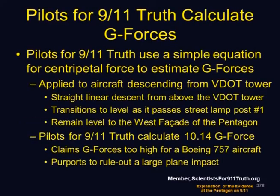G-forces. Pilots for 9/11 Truth calculate G-forces, and many people have used their assertion that these forces are too high to rule out a large plane impact. So we're going to take a look at what they actually said. The pilots use a simple equation for centripetal force, applied to the aircraft descending from the top of the V-dot tower — a straight linear descent to an arc transitioning to level as it passes street lamppost number one, then remaining level to the west facade of the Pentagon. They calculate a total of 10.14 G-forces, claiming it's too high for a Boeing 757 and purporting to rule out a large plane impact.